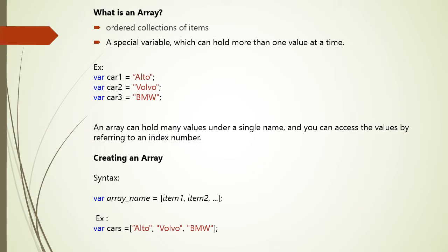For example, if you have a list of car names, storing them in single variables would be: car1 = 'Alto', car2 = 'Volvo', car3 = 'BMW'. However, if you have more than 400,000 car names to store, the solution is to use an array. An array can hold many values under a single name, and you can access the values by referring to the index number.